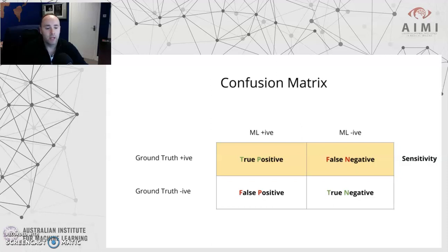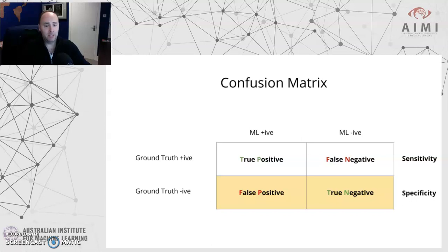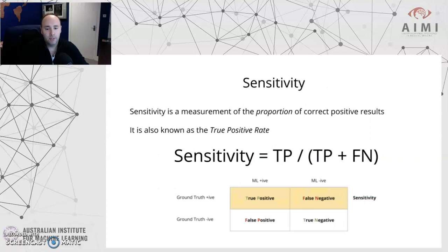We can calculate the sensitivity of a test using just the TP and the FN — true positive and false negative. The sensitivity of a test corresponds to the top row, and it is a measurement of the proportion of correct positive results. It's also known as the true positive rate — an interchangeable term with sensitivity. The calculation is very simple: it's the total number of true positives divided by the total number of true positives plus the false negatives, using only the first two boxes in the first row.